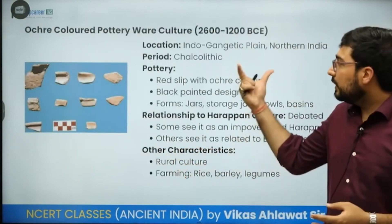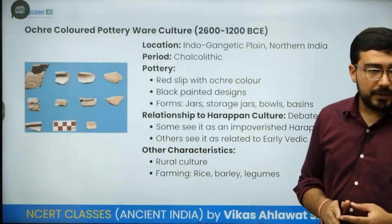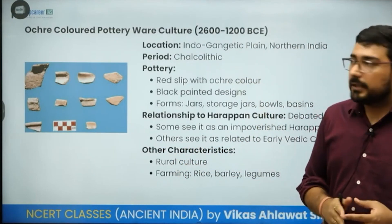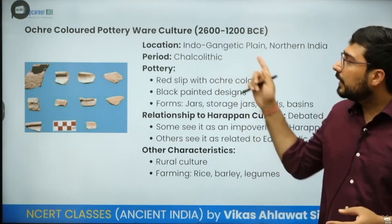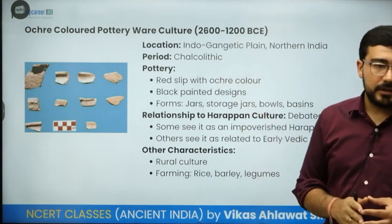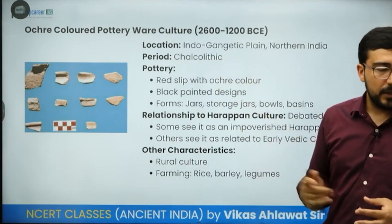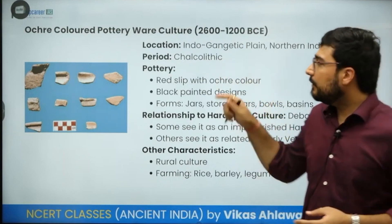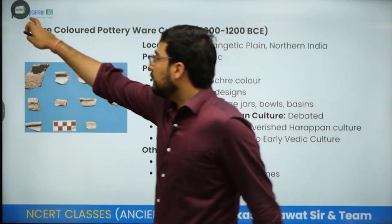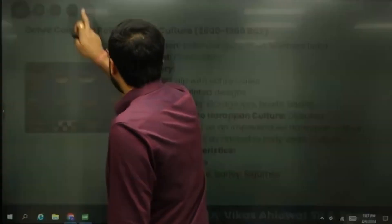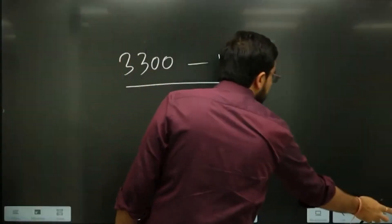One of the major elements of the Chalcolithic period is the Ochre Coloured Pottery (OCP) culture. Whenever we talk about potteries, a question can come in Prelims at any time, so a timeline of pottery types must be known.